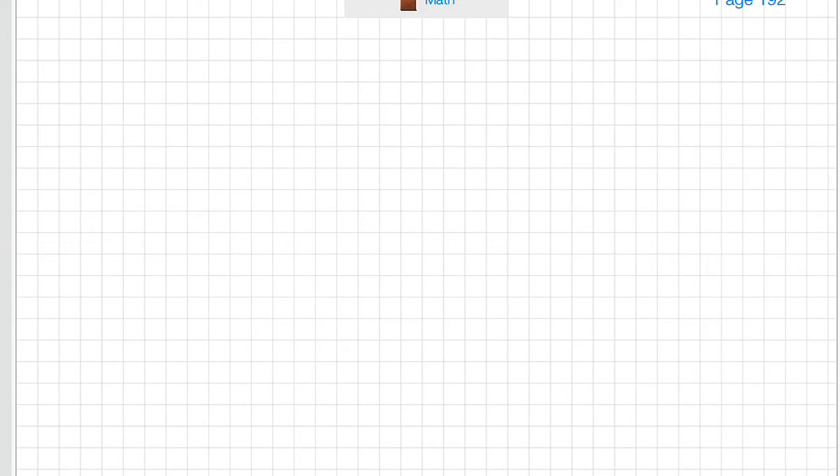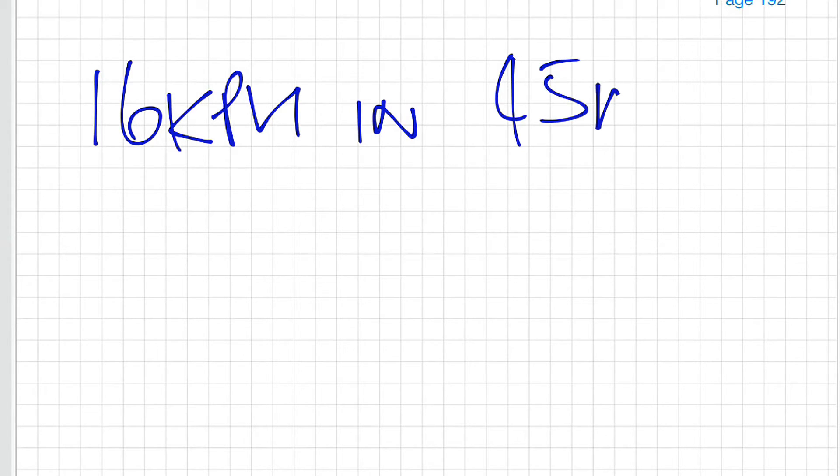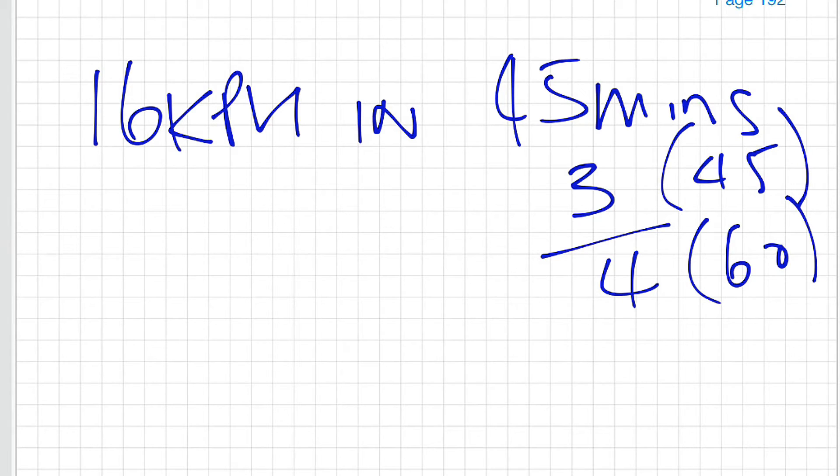Let's move on to number 3. Question number 3: 16 kilometres per hour in 45 minutes. Remember the groups of time where we had 15 or 30 or 45, the reason those numbers were fairly easy to deal with was that they're in nice easy fractions. 45 minutes out of 60 minutes, it's 3 quarters.